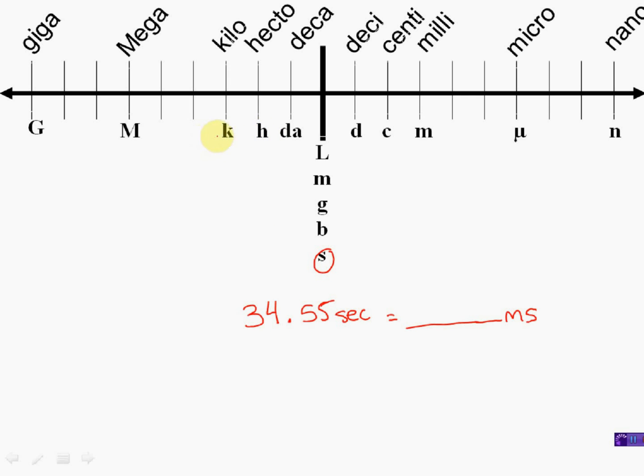Any number that's on the number line, kilo, hecto, deca, those are all prefixes you put in front of the word second. Right now, I have seconds. I don't have anything in front of it. So I know my location is going to be right here on the middle of the number line. That's where I am. Where am I going to? Let's look down here on the problem. The problem says I have a little m. Little m stands for milli. That means I'm going to this location right here.